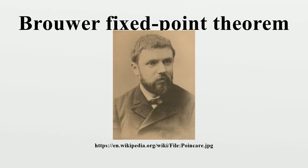History. The Brouwer fixed-point theorem was one of the early achievements of algebraic topology, and is the basis of more general fixed-point theorems which are important in functional analysis. The case n equals 3 was first proved by Piers Bohl in 1904, and later proved by L. E. J. Brouwer in 1909. Jacques Hadamard proved the general case in 1910, and Brouwer found a different proof in the same year. Since these early proofs were all non-constructive indirect proofs, they ran contrary to Brouwer's intuitionist ideals. Methods to construct fixed points guaranteed by Brouwer's theorem are now known.